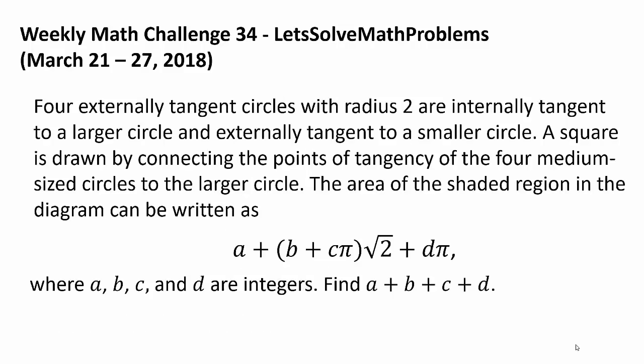Four externally tangent circles with radius 2 are internally tangent to a larger circle and externally tangent to a smaller circle. A square is drawn by connecting the points of tangency of the four medium-sized circles to the larger circle.